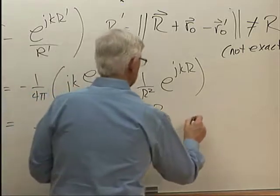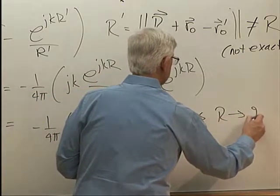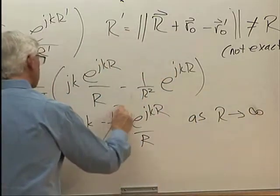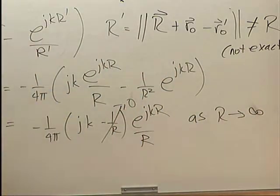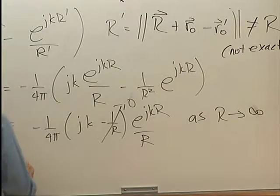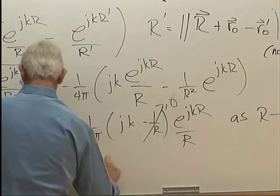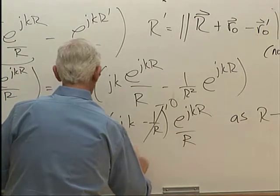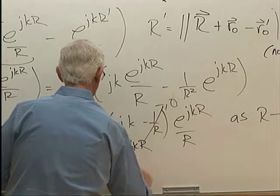So we can see, let's write this minus 1 over 4 pi, jk minus 1 over R times e to the jkR over R. So as R approaches infinity, then this 1 over R term, we can say that goes to 0.